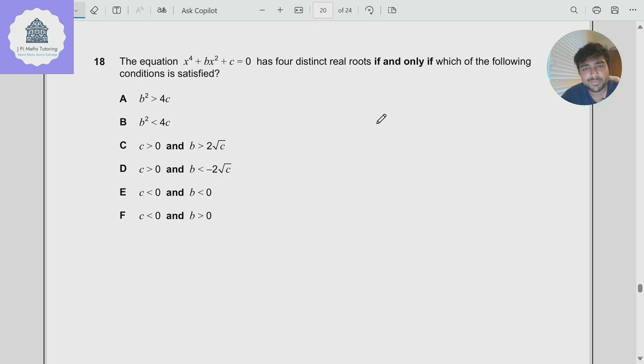The equation x to the 4 plus bx squared plus c equals 0 has four distinct real solutions if and only if which of the following conditions is satisfied. We've got six different options here. Let's dive in.